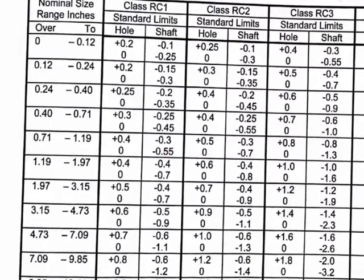We have RC3 class here, and the nominal size is 0.25, which falls between 0.24 and 0.40. So you just take this row, you come across, and it intersects with the column, the RC3 column. The first part is for the holes, and the second part is for the shafts.